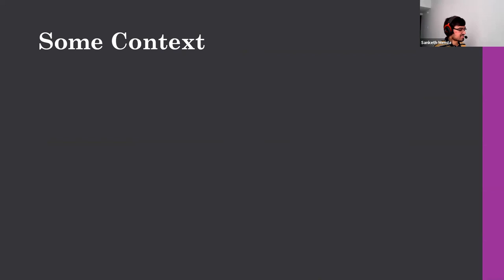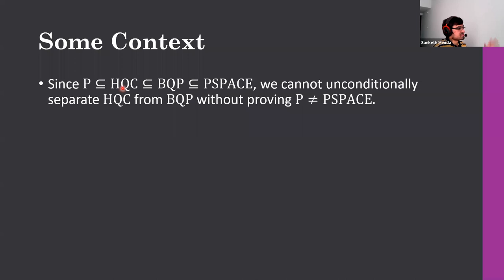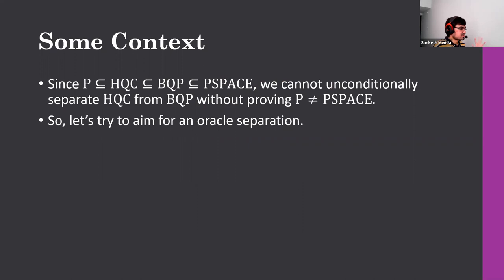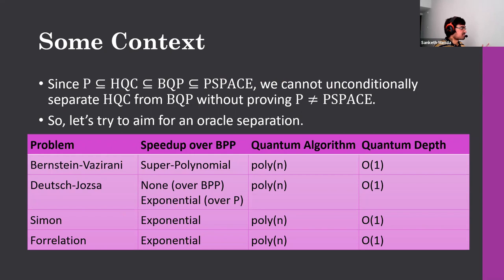Putting our work in context: P contains HQC, which contains BQP, which contains PSPACE, so we cannot hope to unconditionally separate these classes without proving P ≠ PSPACE. So let's go for oracle separations. Starting with the classic oracle problems from a first quantum computing class: Simon's, Bernstein-Vazirani, Deutsch-Jozsa, and Forrelation — though Forrelation is a bit esoteric and may not appear in every introductory course.